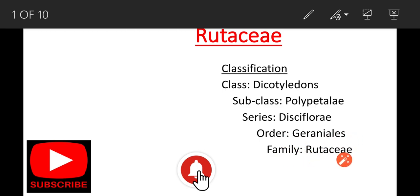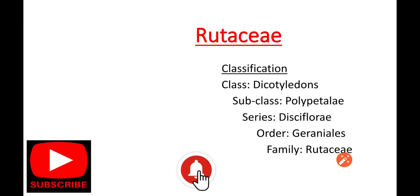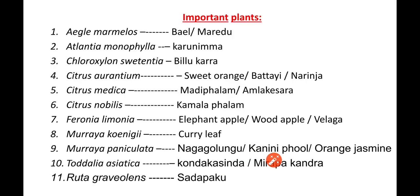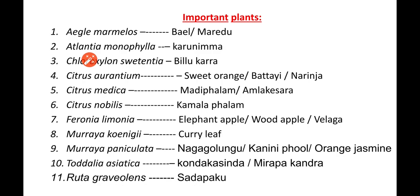Before watching my video, subscribe to my channel and click on the bell icon. Now, coming to important plants of this family. First one is Aegle marmelos — in Hindi it is called Bel plant, in Telugu it is called Maredu. Next one is Atlantia monophylla. Next one is Chloroxylon swietenia — in Telugu it is called Billukarra.